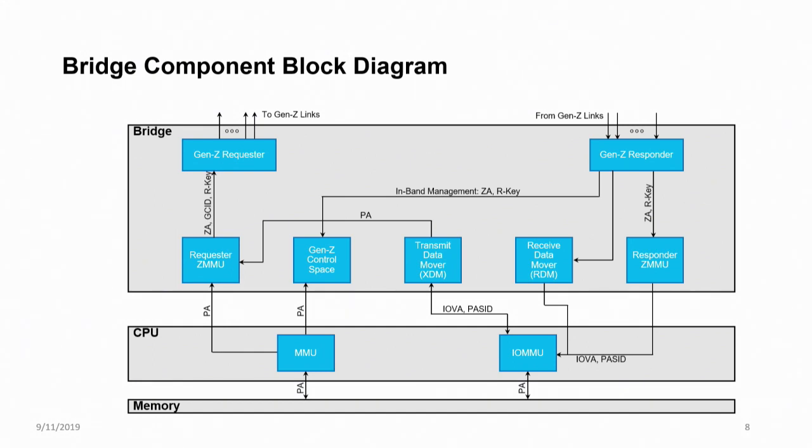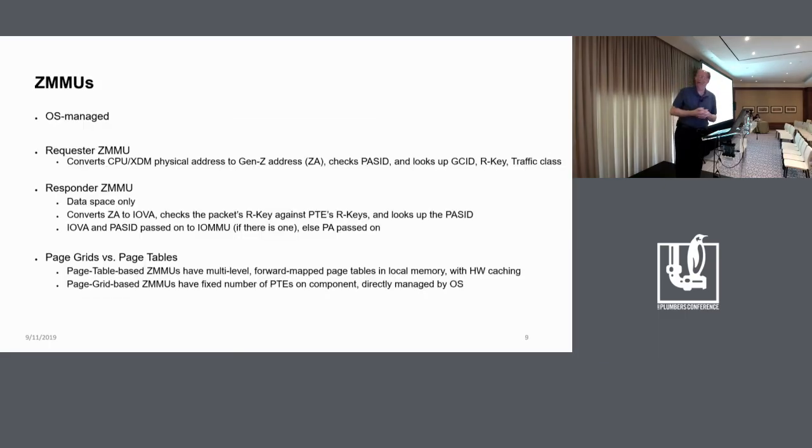And finally, the control space has to be directly accessible, both from the local CPU, and if you're doing in-band management, that control space has to be accessible from the fabric as well. And so, the responder will take control packets, which are different than data packets, and route them not through the responder ZMMU, but to the control space block directly. Again, this is just an example. You don't have to build your bridge like this, but Gen Z subsystem needs to be able to manage these resources in bridges.